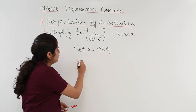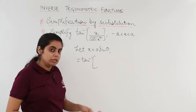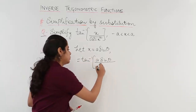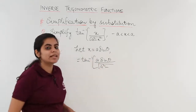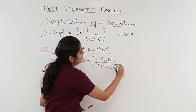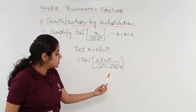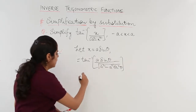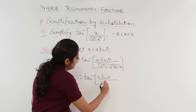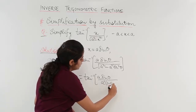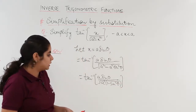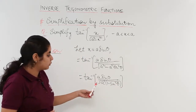The question now changes to tan inverse of (a sin theta) upon under root of (a squared minus a squared sin squared theta). From the denominator, a squared comes out of the under root as a, giving us tan inverse of (a sin theta) upon a times under root of (1 minus sin squared theta).